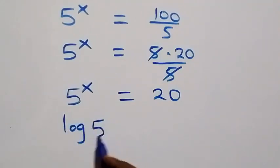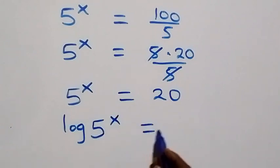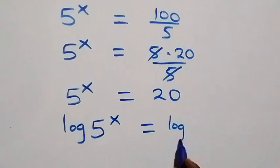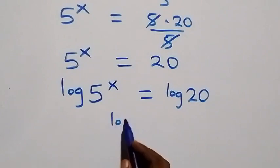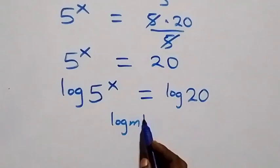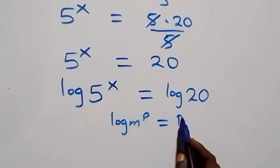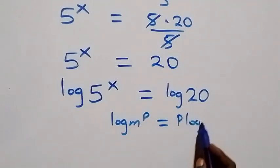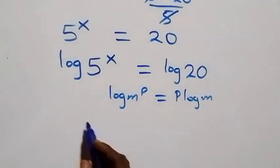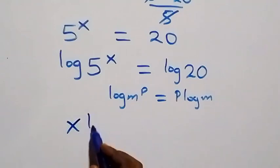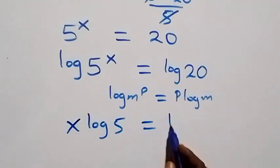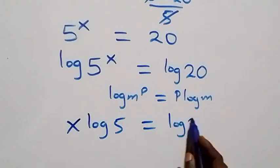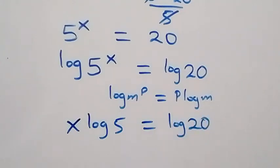We have log of 5 raised to power x equals log 20 on this side. Then we apply the power rule of logarithms: when we have log m raised to power p, this is the same as p times log m. So what we have becomes x times log 5 equals log 20 on this side.